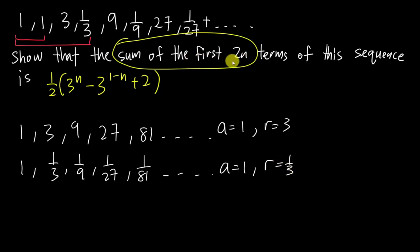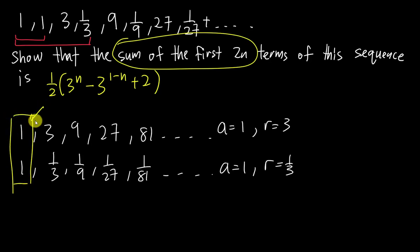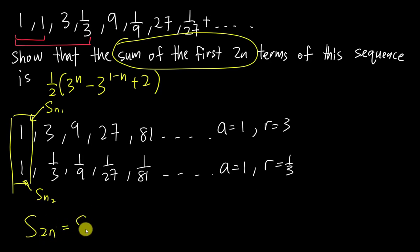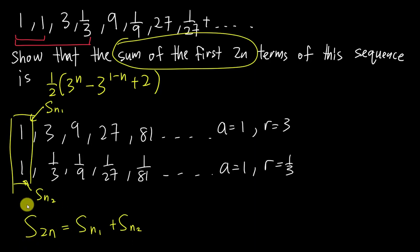In order to find the sum of the first 2n terms, I need to add both subsequences together. So I need to find Sn1 (the sum of the first subsequence) and Sn2 (the sum of the second subsequence). My logic is: S(2n) equals Sn1 plus Sn2.